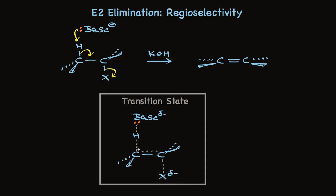And at the same time, we're forming the pi bond—you see the dashed line here—and breaking this sigma bond.